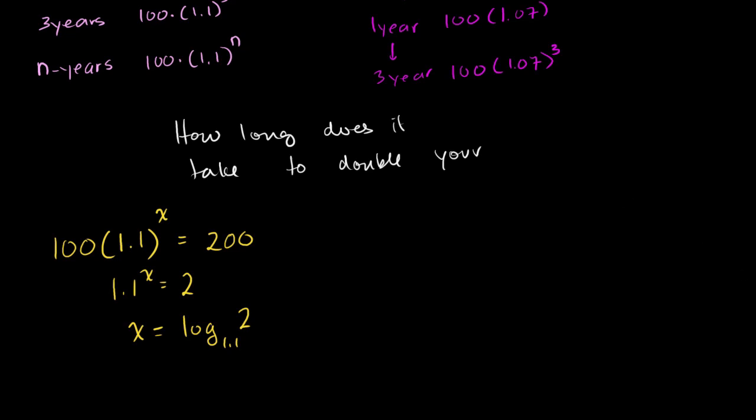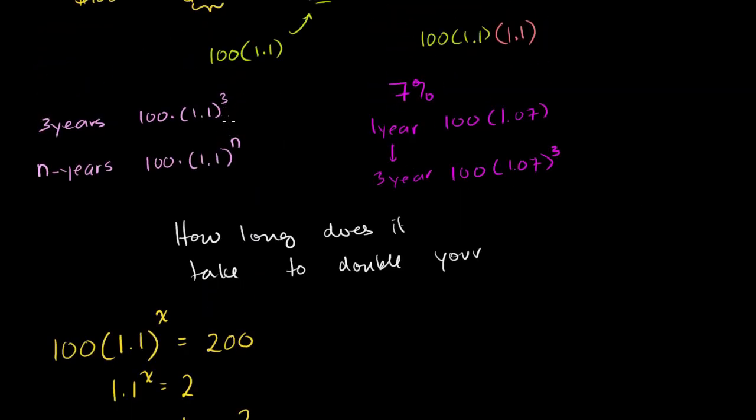So if you have a simple calculator, you can kind of keep incrementing the number of years until you get a number that's close. But no straightforward way to do it. And this is with 10%. If we're doing it with 9.3%, it just becomes even more difficult.